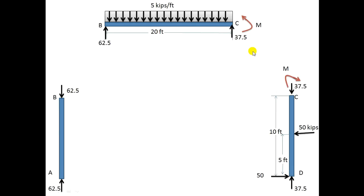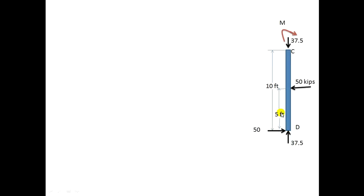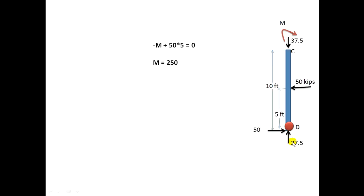To find the transferred moment M, I take the moment about point D for the CD member, taking counterclockwise as positive. M creates a clockwise moment — taken as negative. The 50 kN force at a moment arm of 5 m creates a counterclockwise moment, taken as positive. The forces 37.5 and 50 pass through D so they create no moment. Setting the sum of moments equal to zero gives M equal to 250 kN·m.